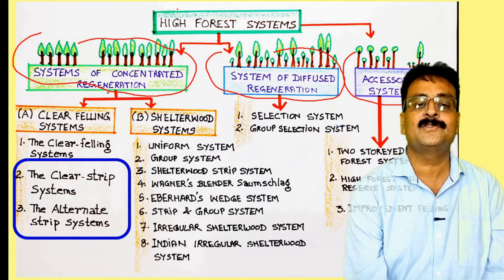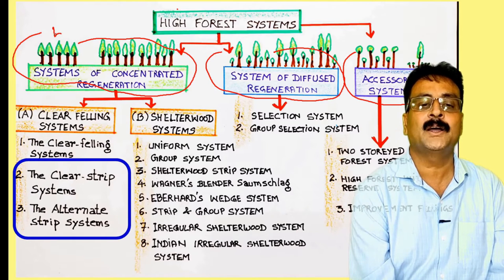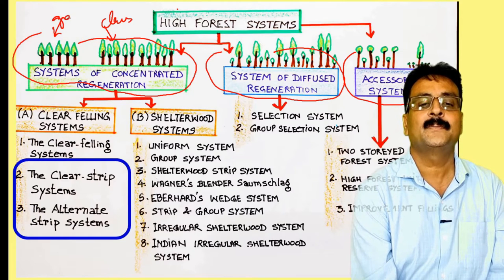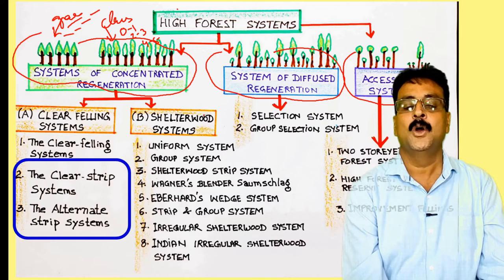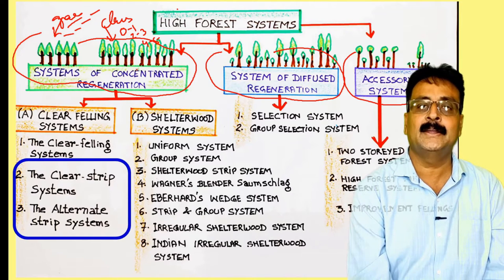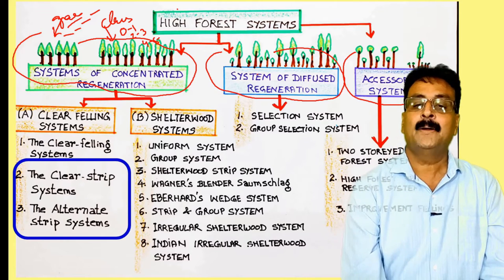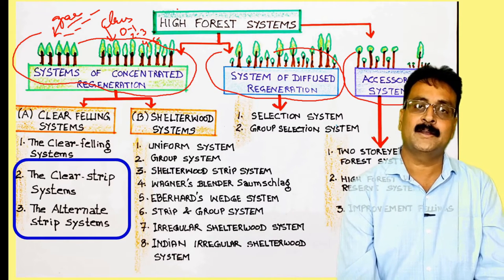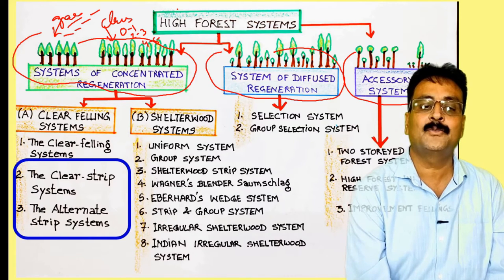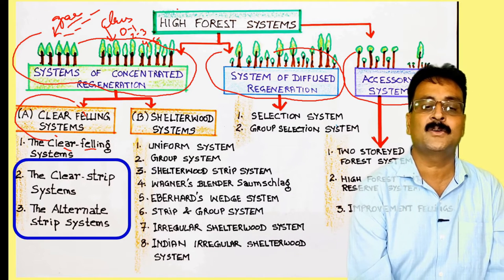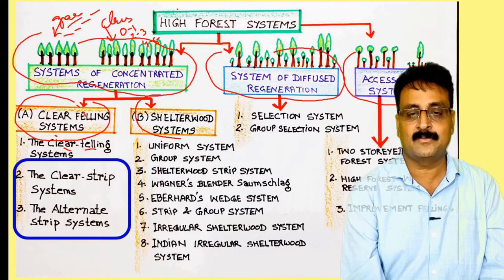In the system of concentrated regeneration, we have already discussed age gradation and age classes — for example, 0 to 5, 6 to 10, 11 to 15, and so on. In the system of diffuse regeneration, we don't have age classes; it is a mixed system. Under concentrated regeneration we have two systems: the clear felling system and the shelter wood system.